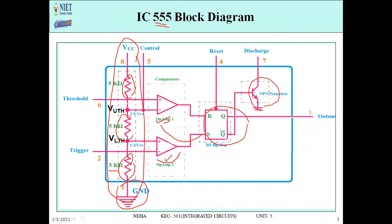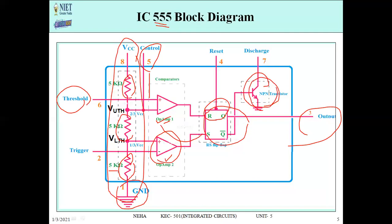In the block diagram: pin 2 (trigger) is the input to the second op-amp comparator, pin 3 is the output, pin 4 (reset) connects to the flip-flop, pin 5 (control voltage) connects to the op-amp, pin 6 (threshold) is the input to comparator 1, pin 7 (discharge) connects to a transistor, and pin 8 is VCC.